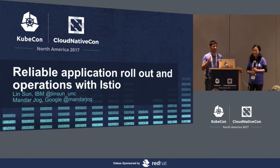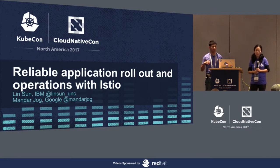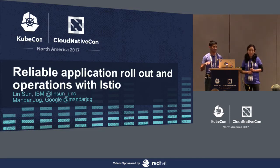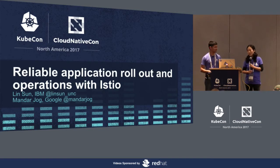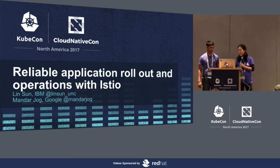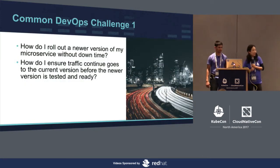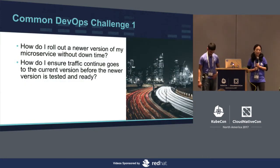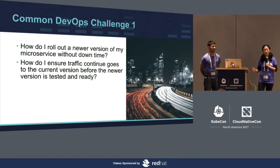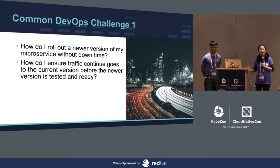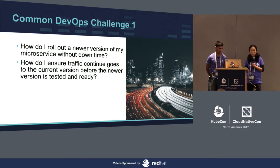First, a show of hands — there have been many Istio sessions so far, so we just want to get an idea of how many of you have attended one or more Istio sessions before. Okay, great. Because we want to use that information to help us. So let's talk about common DevOps challenges. What we're really trying to do with this session is share with you some of the challenges we foresee and how Istio can actually help you solve those challenges — really try to connect the dots for you.